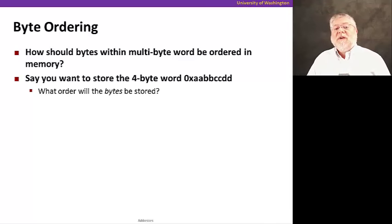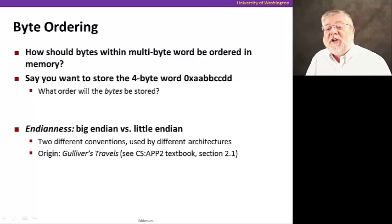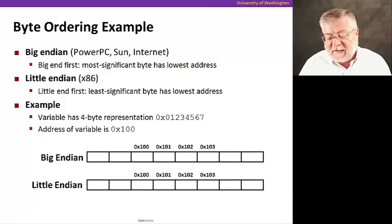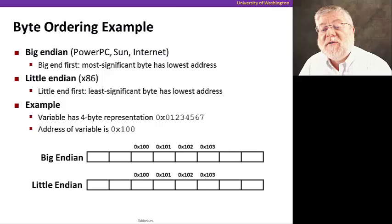All right. The next question is, how do we order the bytes within a word? There's actually two ways to do that. One way is what's called Big Endian, and the other is Little Endian. And these two different conventions, the names for them come from Gulliver's Travels. You can read about this in the textbook by Bryant and O'Hallaron that we're using as a reference text for this class. But basically, the idea is that in a Big Endian notation, the most significant byte of the number goes to the lowest address.